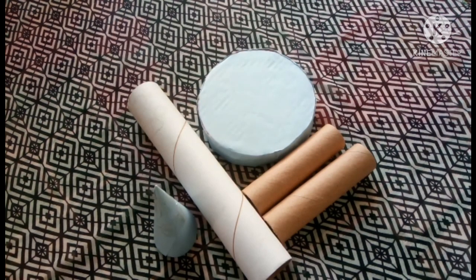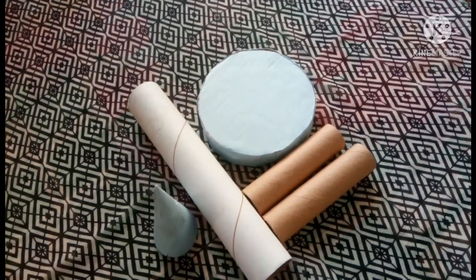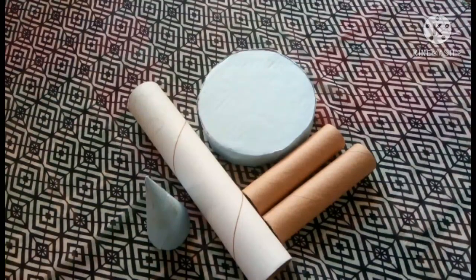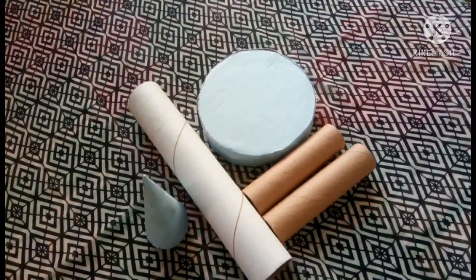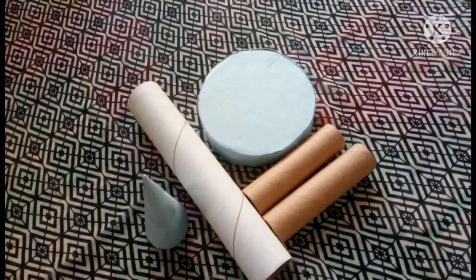Here you can see I have some different shapes of cylinders and cone also. You can make easily different shapes of cylinder by rolling through chart papers or chart boards, and cone also. I am going to make a nice model using only these shapes. Let's see how I am making this.